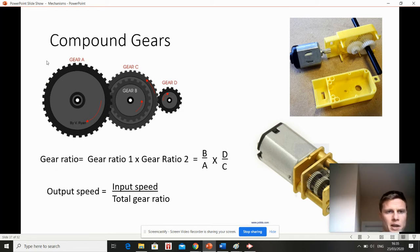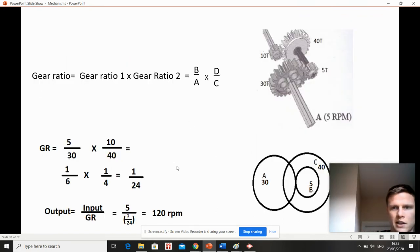If you want to find the output speed, say the input speed is 5 rpm - the speed of this gear is 5 - and we want to find out how fast is this one turning. What you'll do is take your input speed, which would be 5 rpm, and divide it by your total gear ratio that you've got using this formula.